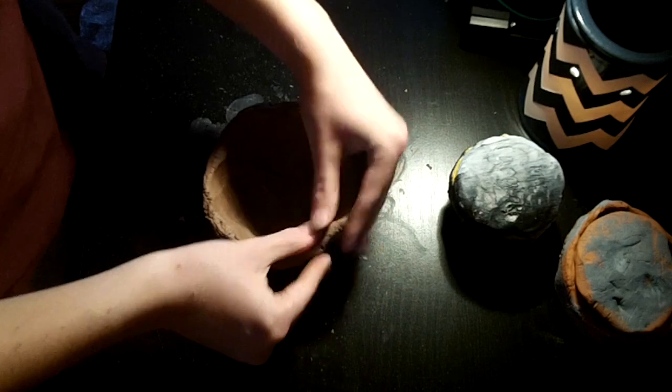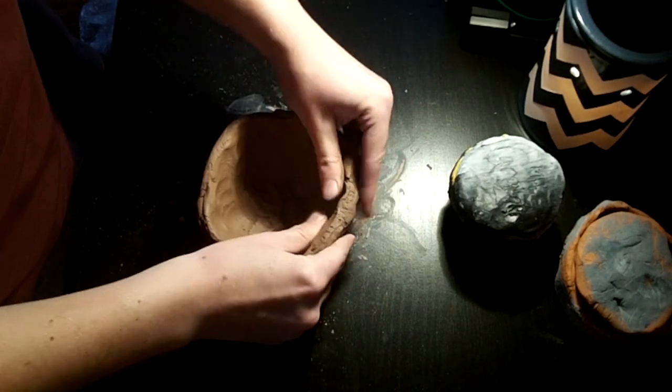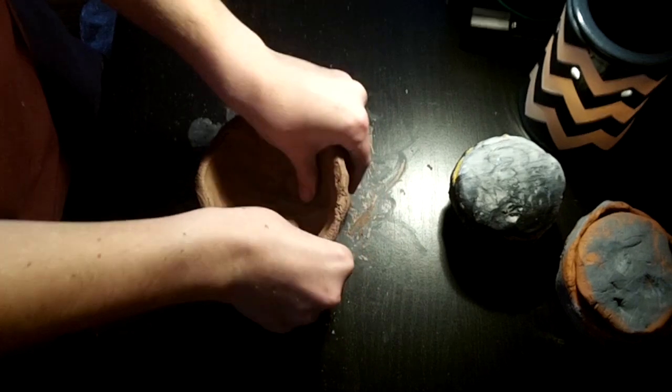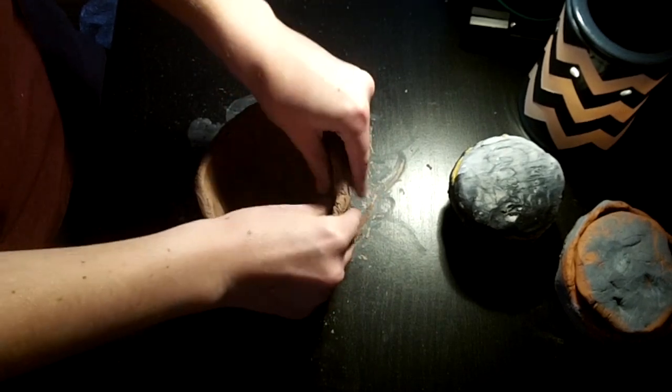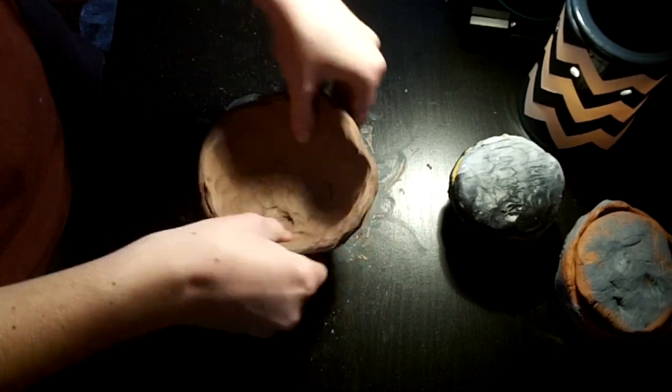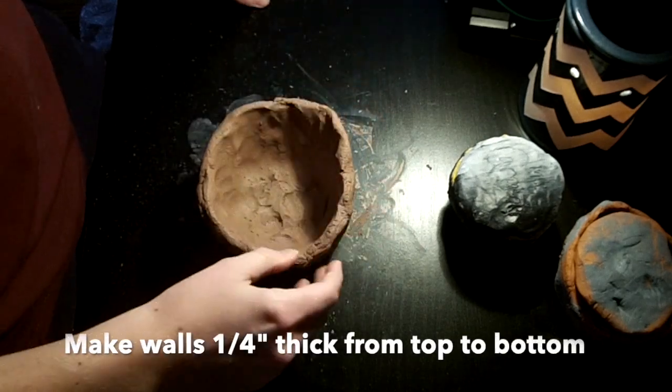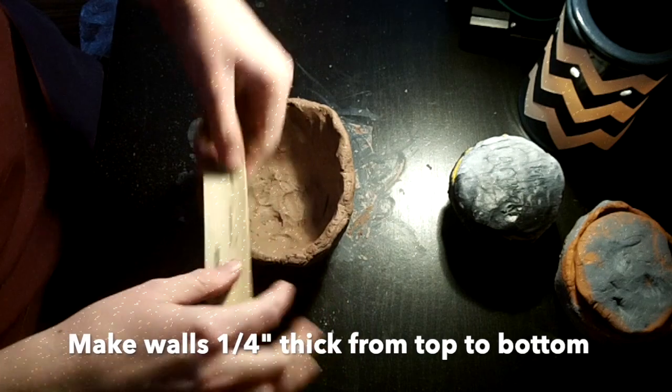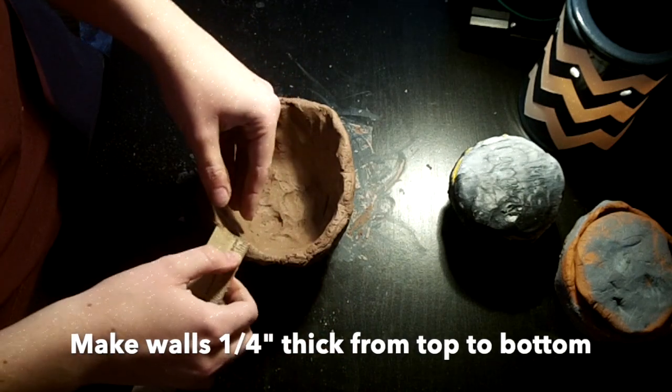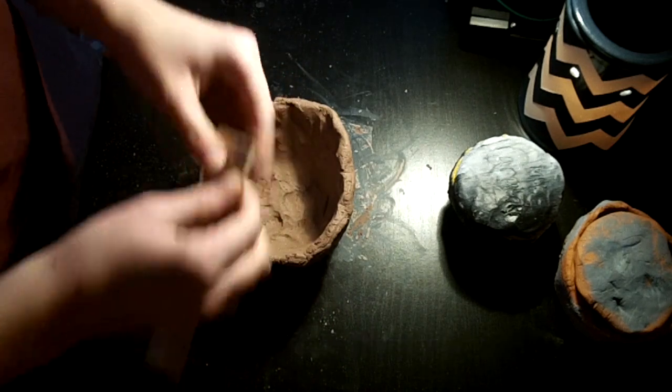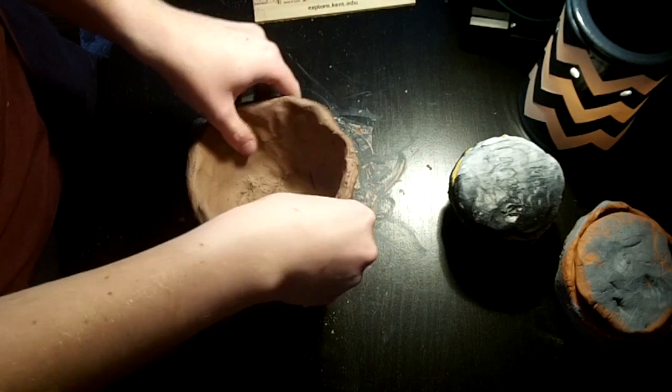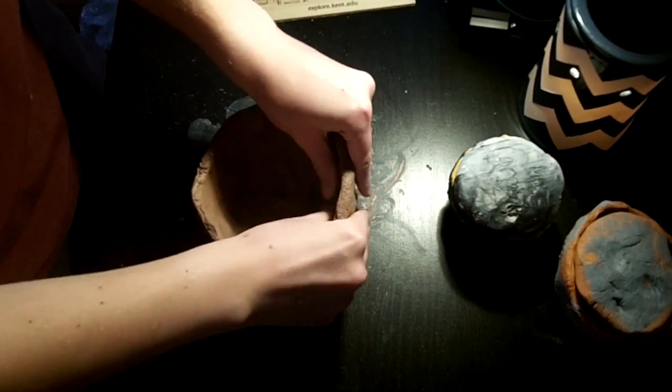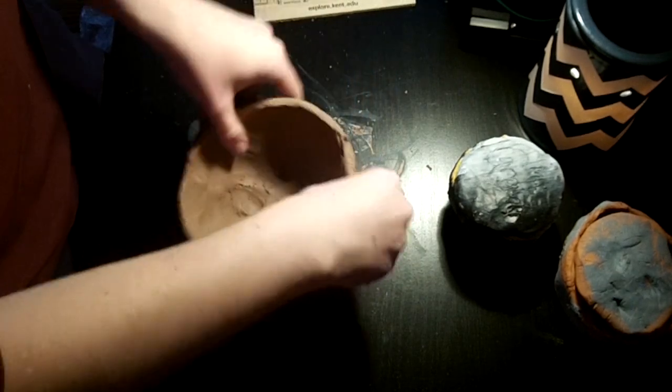And another really important thing is that you want to try and make all of the walls about the same thickness, if you can. And I usually say that you want it about a quarter of an inch thick. So right here on our ruler, this is about a quarter of an inch. So we're getting there. We're still a little bit thick right now, so we can keep pulling the walls apart. And you want to try and make it the same thickness all the way from the bottom to the top.